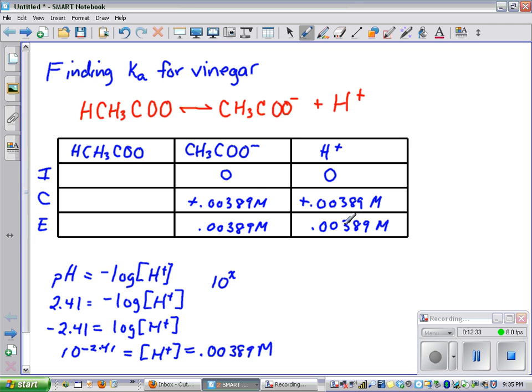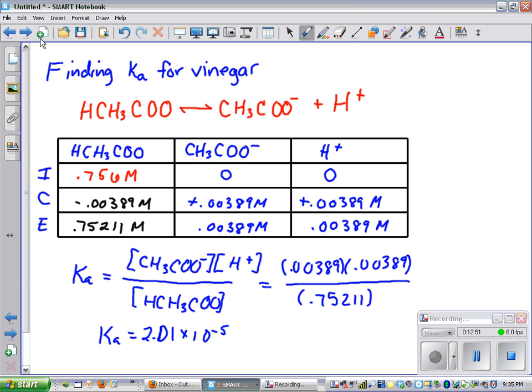That means this had to be the same value. One mole of this was created and one mole of this was created, so these two were also the same values. Then we did our titration to figure out what this value was here. We knew that if this much was added, this much had to be taken away here, so we got this value. We wrote our expression for Ka and then we substituted in to get our final expression.